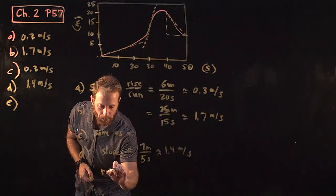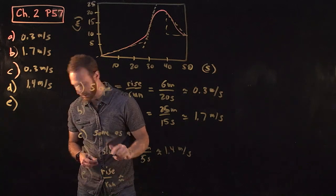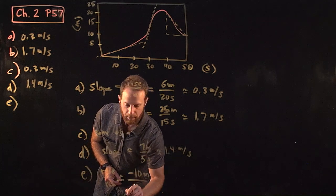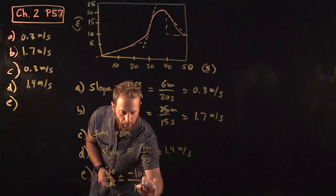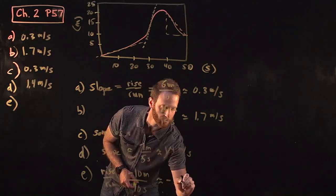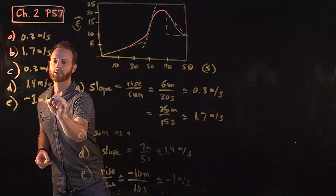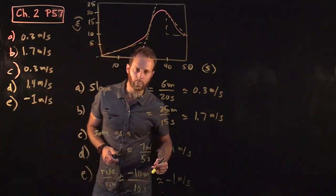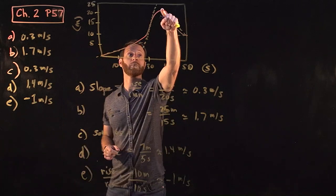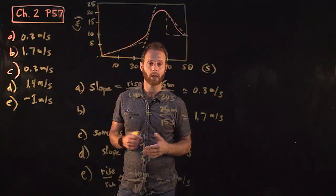Here, the rise over the run I estimate to be approximately dropping by 10 meters, or minus 10 meters over those last 10 seconds—about minus 1 meter per second. Whether you got 1.1 or 0.9 wouldn't matter, but keep in mind that minus sign is important because the position definitely comes back. In other words, the displacement is negative, so the velocity is negative.